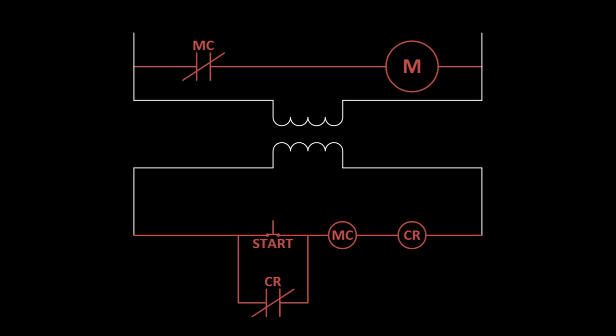The function of the control relay becomes apparent when the push-button switch is released. While power no longer flows through the now-open switch, the control relay contact provides a parallel path, and so both coils stay energized.